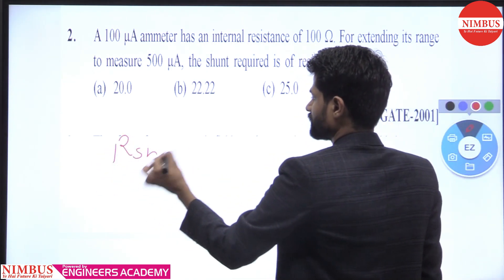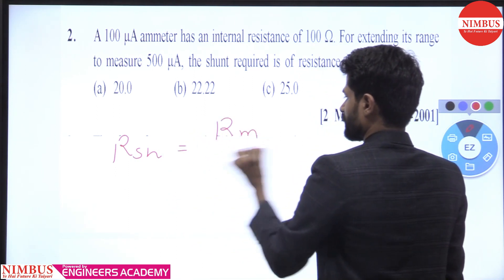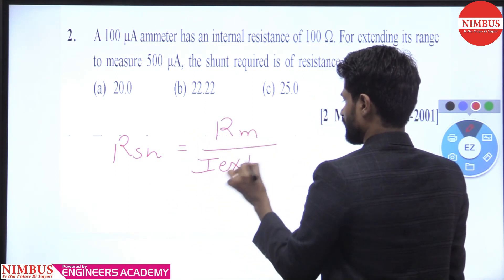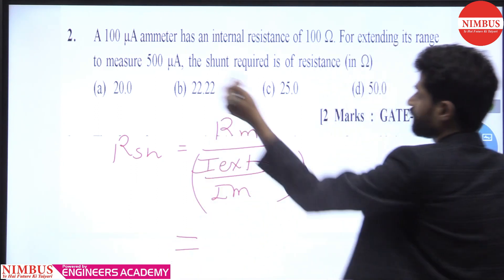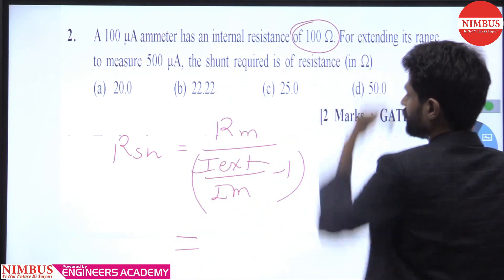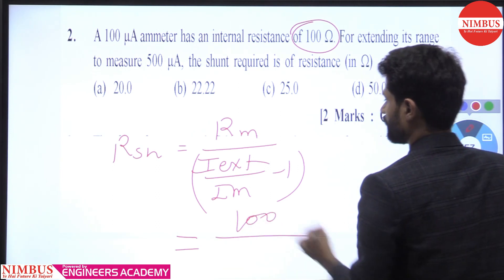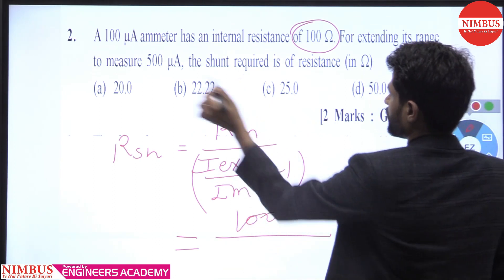The formula for R_sh is R_m divided by (I_ext/I_m minus 1). The value of R_m is 100 ohm divided by I_ext. How much do we need to extend the range?